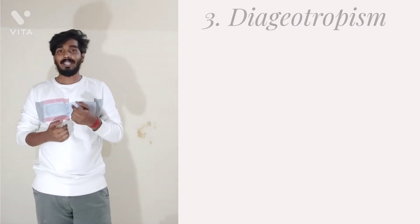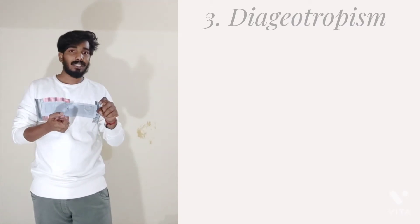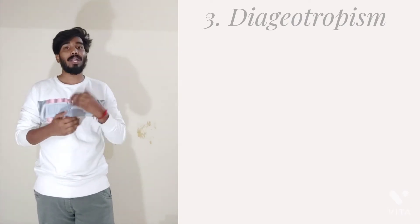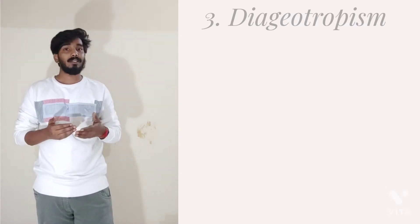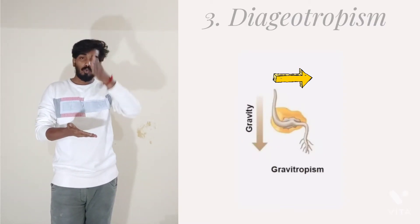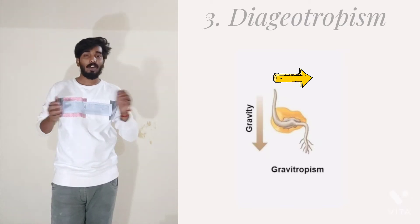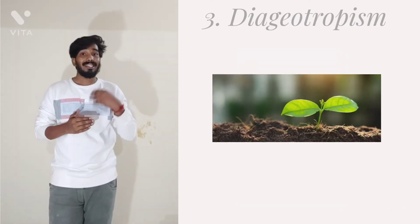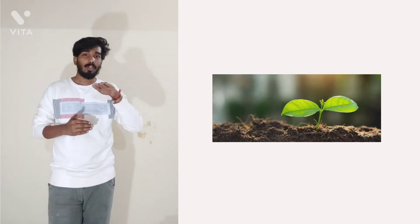The last type is diageotropism, where the plant organ grows its apex horizontally at a right angle to the gravitational force. It is generally seen in bilateral organs of the plant — the secondary roots. Primary roots always go toward the source of gravity, but secondary roots spread in a horizontal manner inside the soil surface. Leaves, which are bilateral organs, are neither away from nor attracted toward gravity — just horizontal. Even some branches of trees are diageotropic in nature.